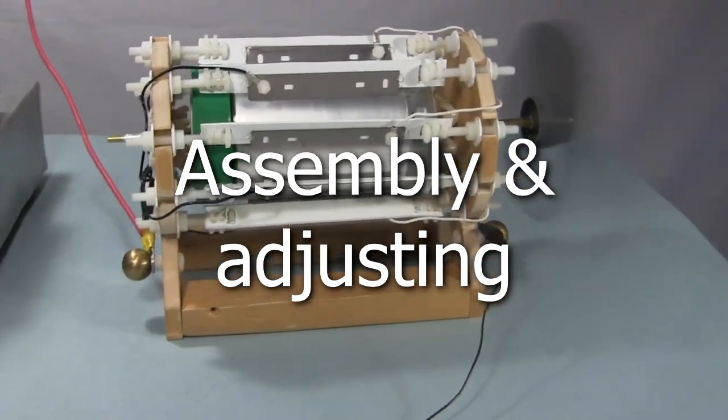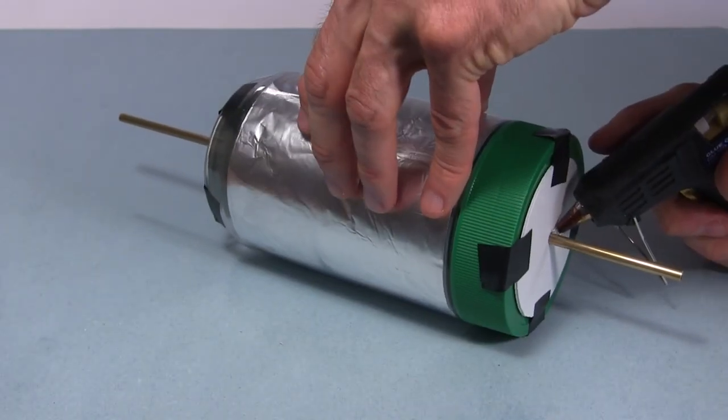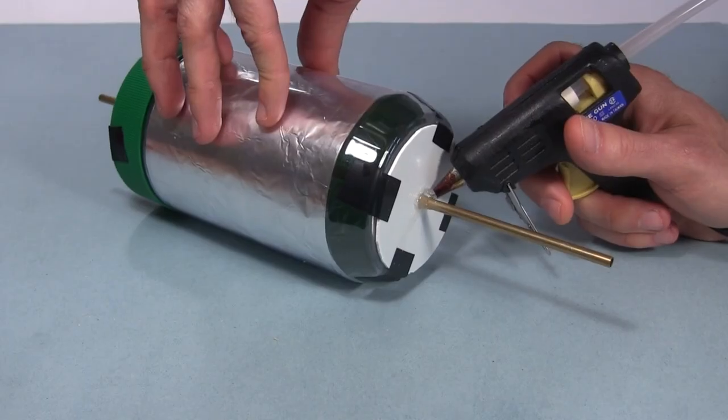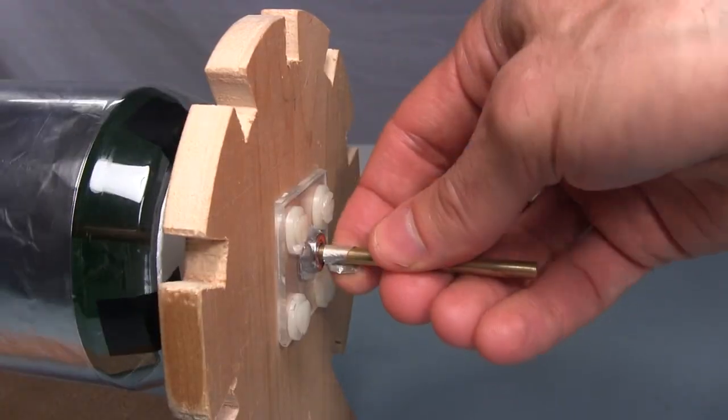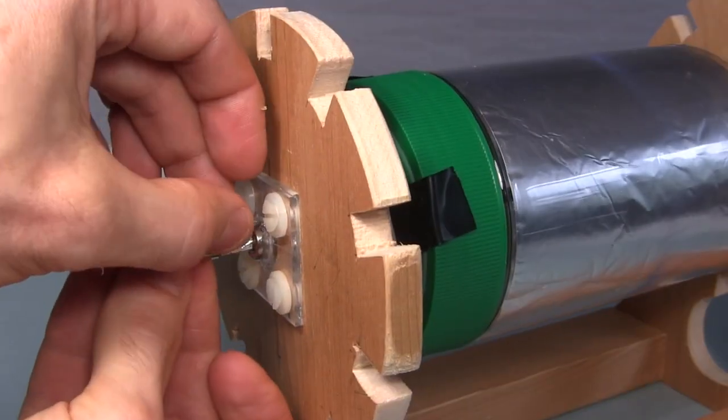Time for assembly and adjusting. First comes hot gluing the plastic discs on the ends of the cylinders to the shaft. Then that's put on the stator. A little tape on each end keeps the shaft from moving in and out.